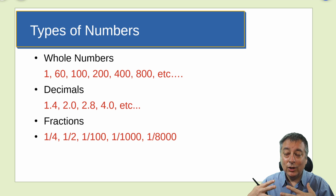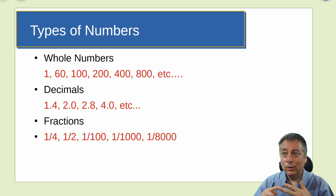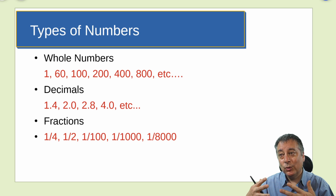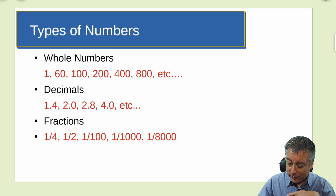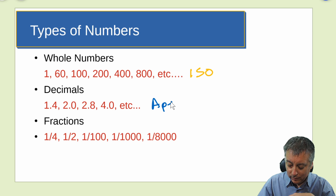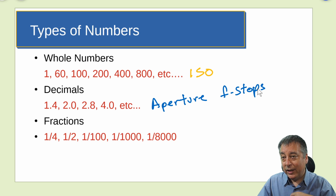Let's get into the exposure settings — the numbers, the math involved, and how they're all related to each other. There are really only three types of numbers: whole numbers like 100, 200, 400; decimals like 1.4 or 2.0; or fractions like 1/5, 1/25, 1/100, 1/1000, etc. Generally, whole numbers correspond to ISO, decimals to aperture (sometimes called f-stops), and fractions to shutter speeds.